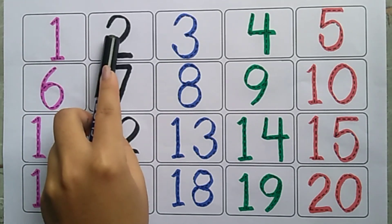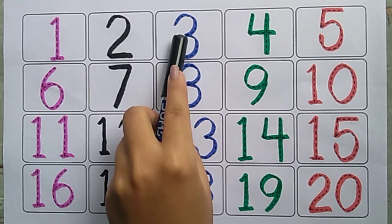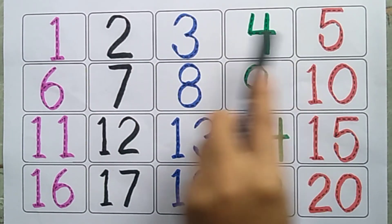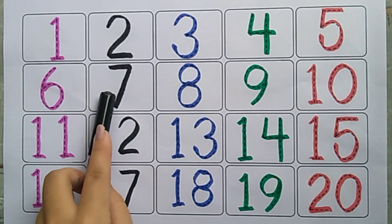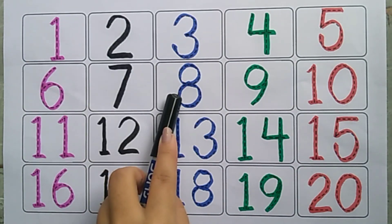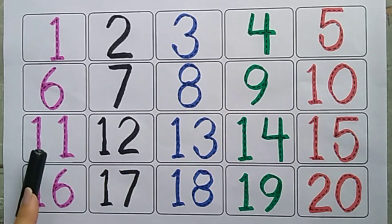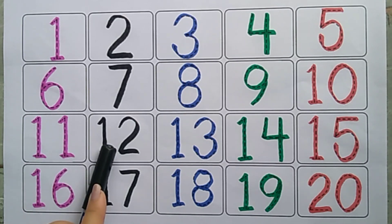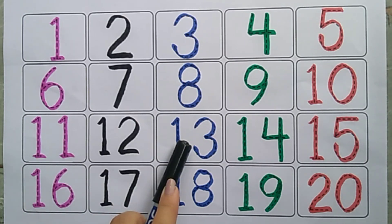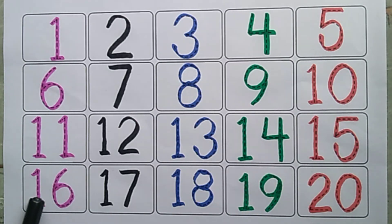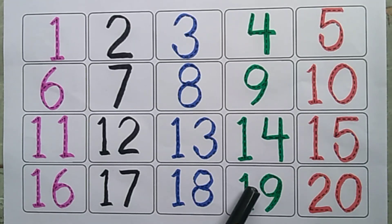1, 2, 3, 4, 5, 6, 7, 8, 9, 10, 11, 12, 13, 14, 15, 16, 17, 18, 19, 20.